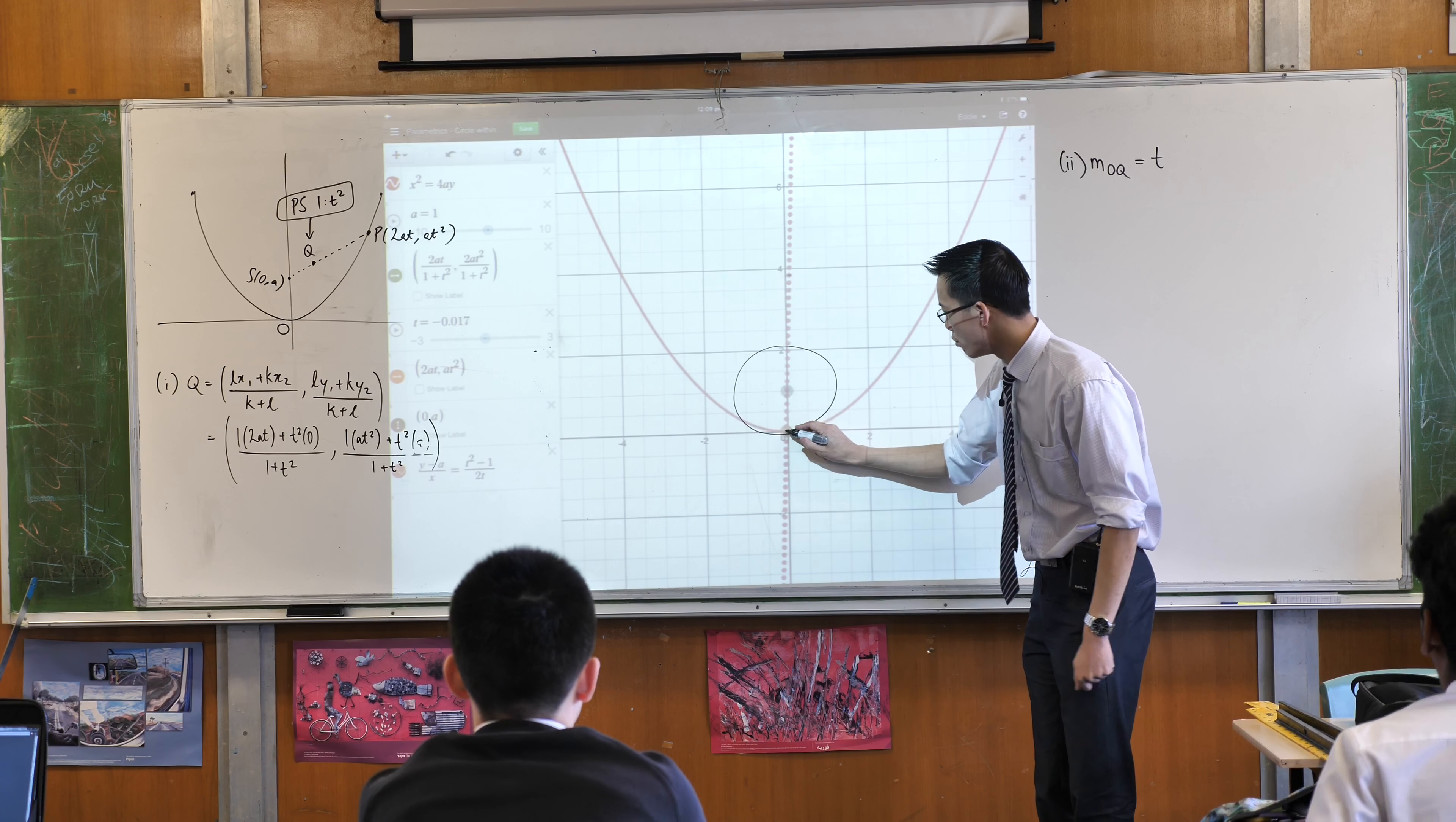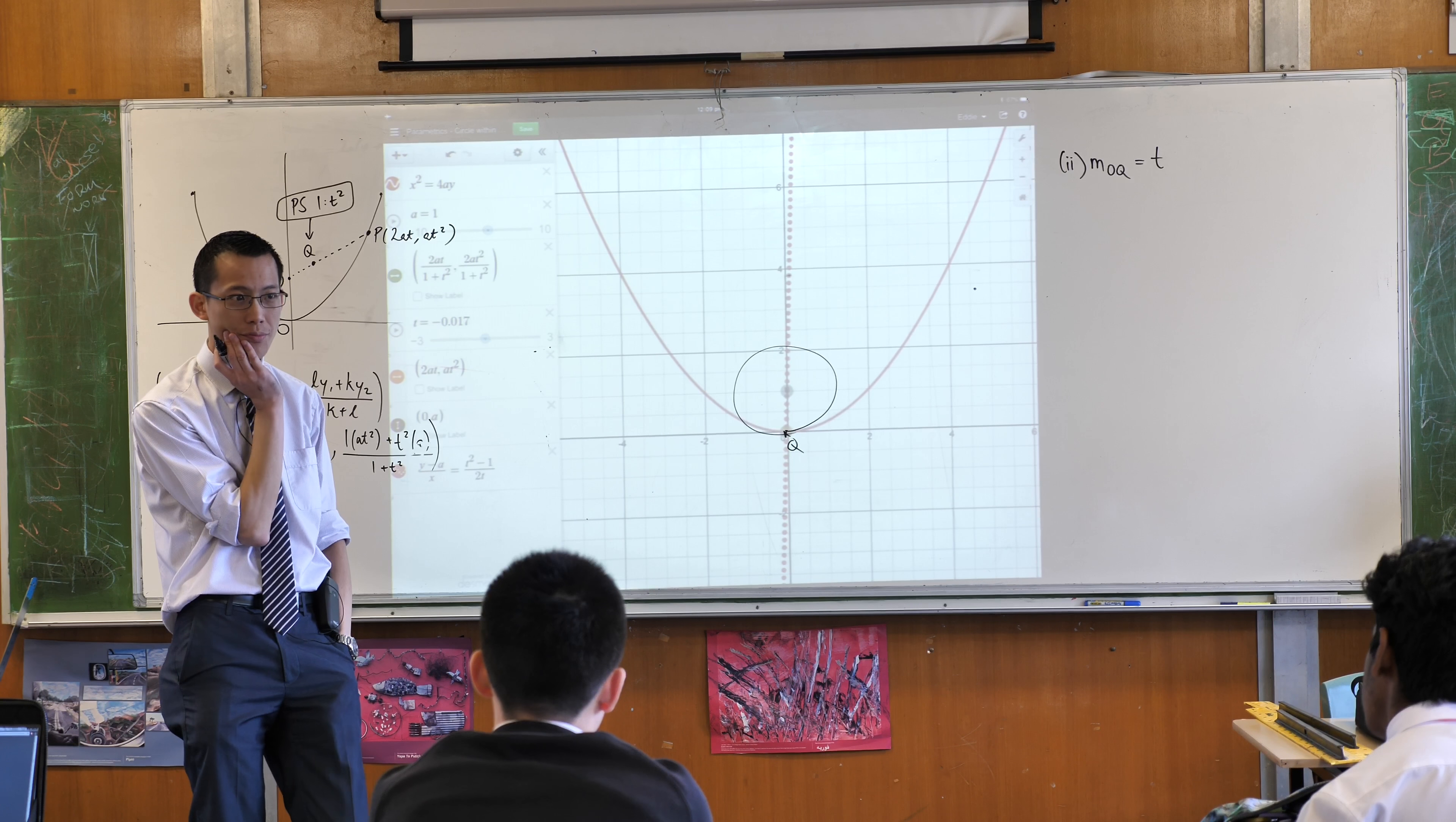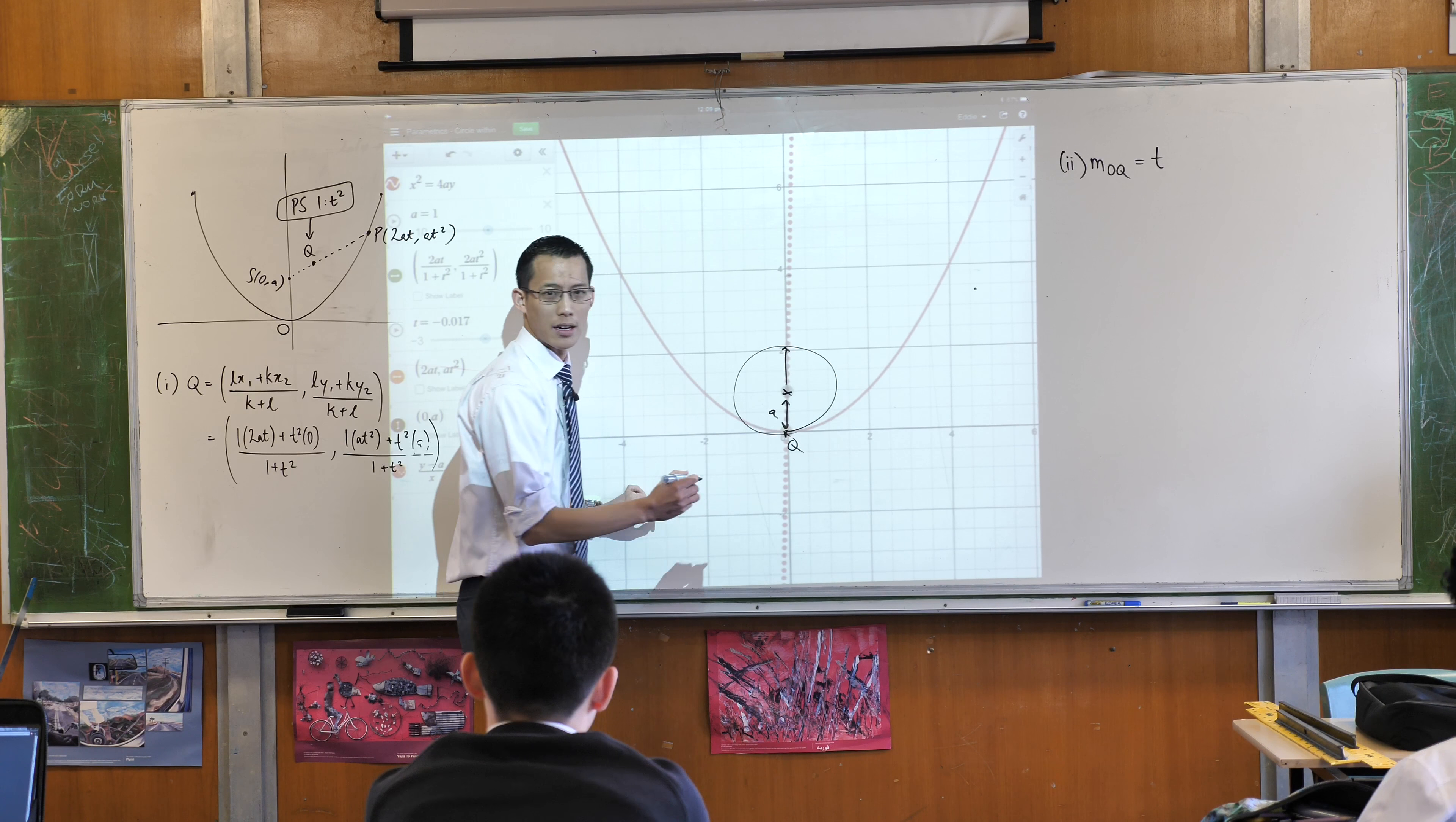So if Q can exist there, if the locus of Q, I just drew the locus of Q by the way. If Q can go through there, and there's a radius of A, where is the center of the circle? The focus is the center, isn't it? Because look, that distance there is A, correct? And that also means you can infer from that, this point up here, right?